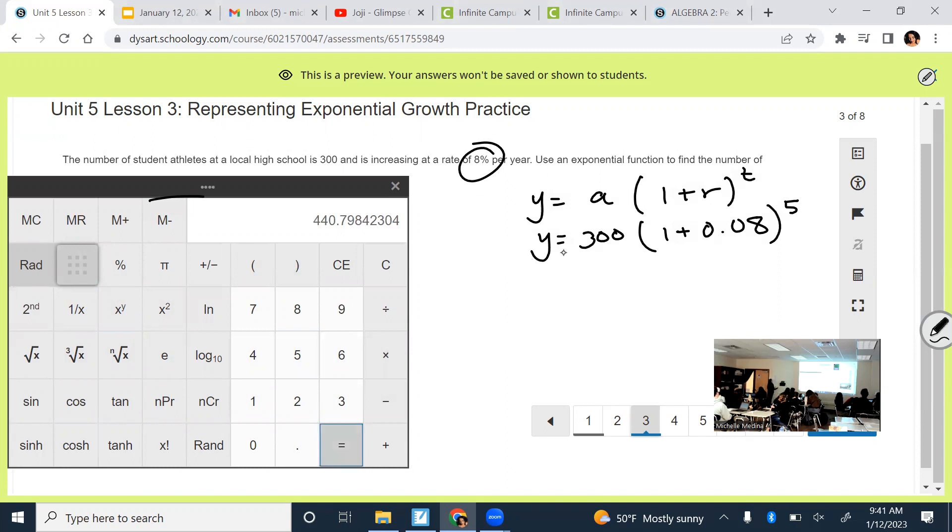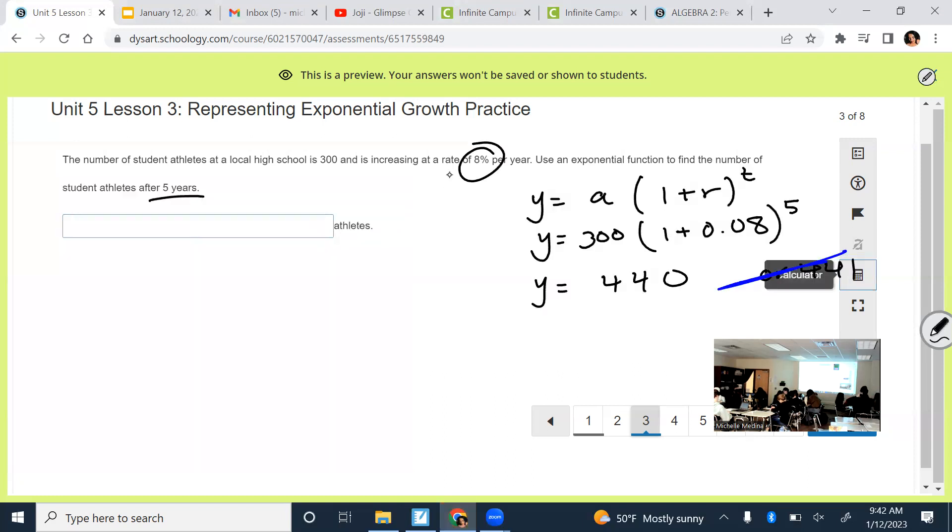Put it in your calculator: 300 parentheses 1.08 to the power of five equals. I get a decimal. Are we talking about money in this one? No. What are we talking about? Can I have a decimal of a student? What do we think the answer is? The debate is 440 or 441. Now, the data doesn't support us having a whole other student. It supports 0.798 of a student, which is not possible. So even though following normal rounding rules you would think it's 441, it's not.